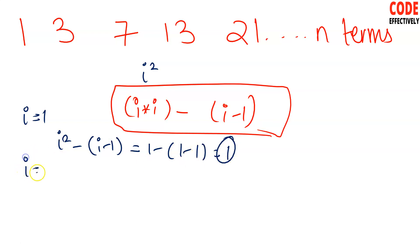i equals to 2, let's go for another one. i square, how much is it going to be? 4. 4 minus 2 minus 1, so it will be 4 minus 1, it is 3. Second term we have, right? i equals to 3 and see this is right. So it is what? i square, it is 9 minus 3 minus 1, so it will be what? 9 minus 2, so it is 7.